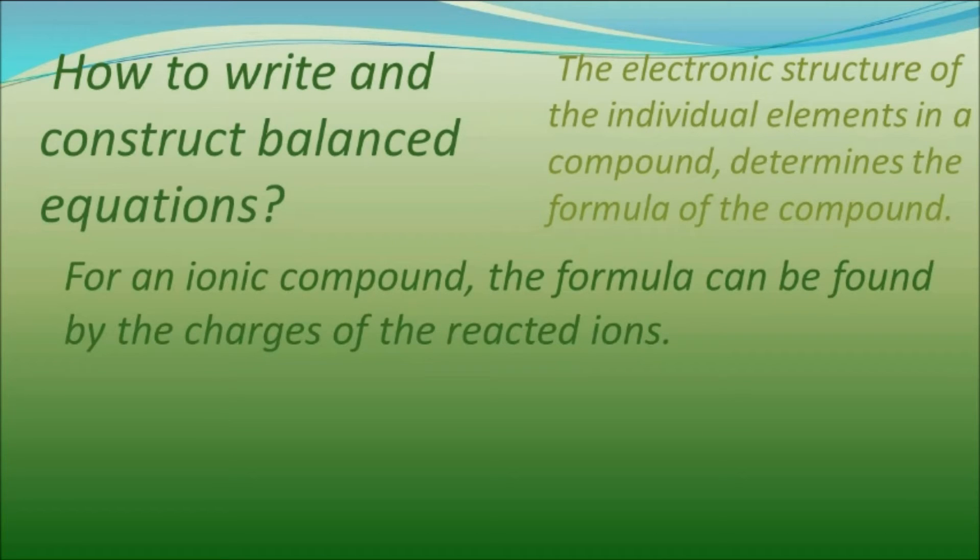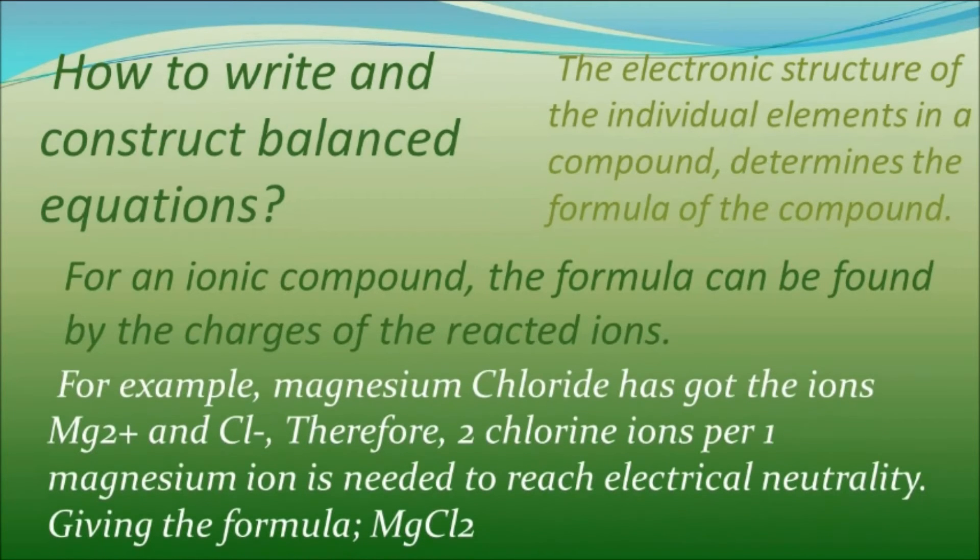We can find the formula of an ionic compound by knowing the charges of the reacted ions. So if you want to find the formula of magnesium chloride, we have to figure out the charges of the ions present: magnesium 2+ and chloride negative. So we need two chlorine ions for one magnesium ion to reach electrical neutrality, giving us the formula MgCl2.